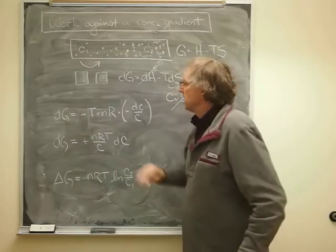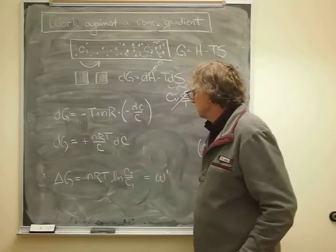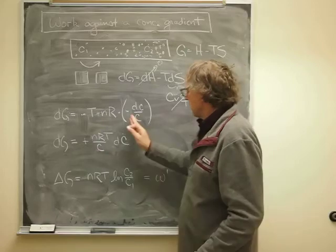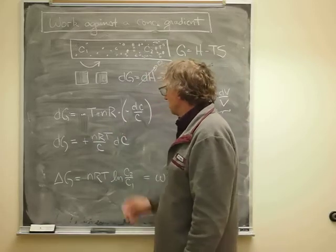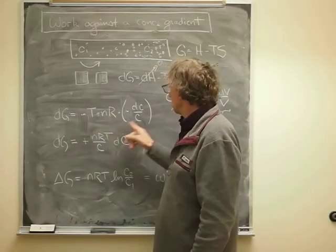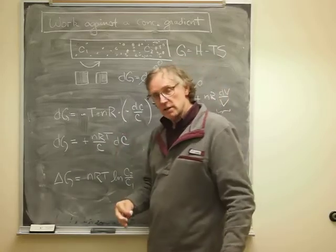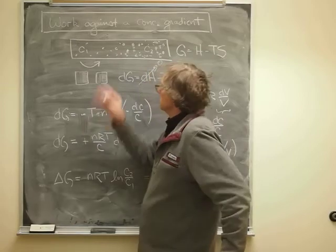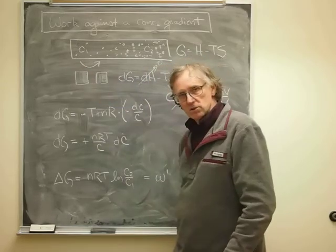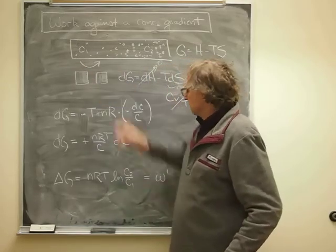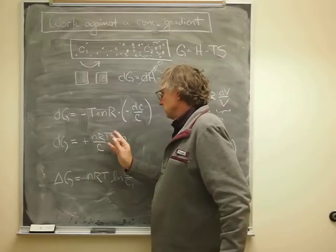And so I have nRT at the top and concentration at the bottom. So if I want to calculate the change in Gibbs energy resulting from that tiny little concentration change in that first step, I just take nRT divided by that concentration multiplied by the change in concentration.